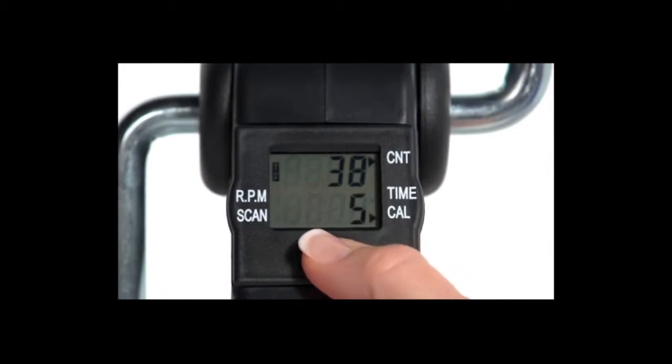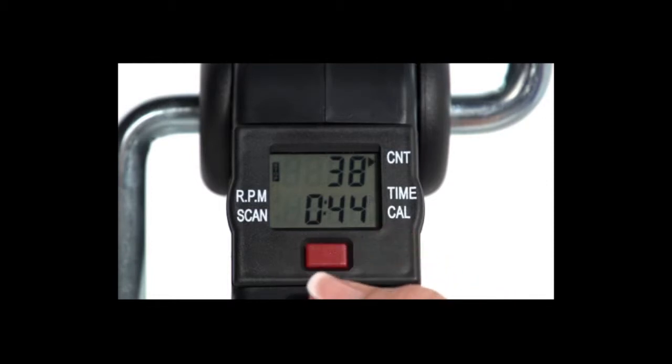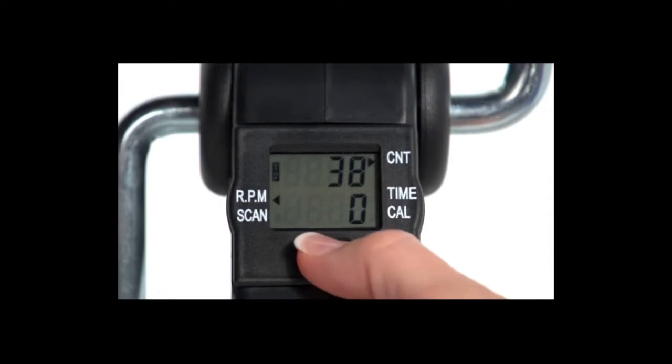This five-function display indicates exercise time, revolution count, revolutions per minute, calories burned, and a scan function so users can conveniently monitor their exercise activity and progress.